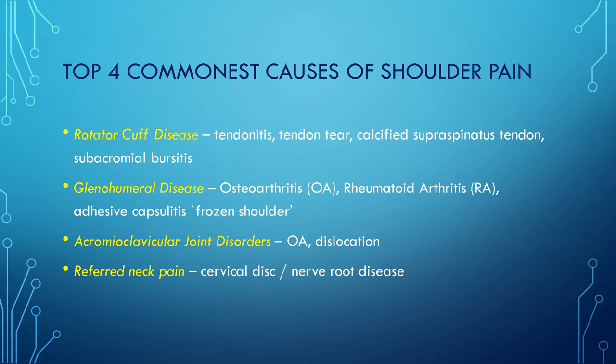You can further divide these into different components of rotator cuff disease — whether that be inflammation of the tendon, a complete tendon tear, calcification of the supraspinatus tendon causing pain, or subacromial bursitis. Looking at glenohumeral disease, you can consider arthritic disease — whether that's osteoarthritis or rheumatoid arthritis — or capsular disease, where patients can develop adhesive capsulitis, otherwise known as frozen shoulder.